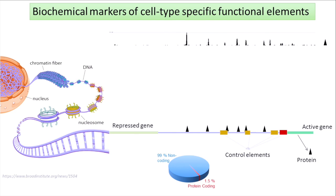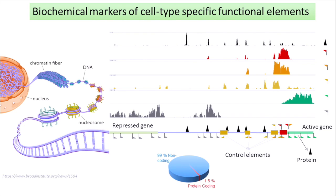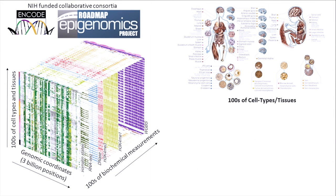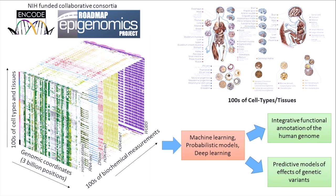The secret is that cells use various kinds of biochemical markers — shown here as little red, yellow, and green flags. Each of these biochemical markers marks different types of elements, including the control elements as well as the genes. The NIH funded a very large-scale project — two consortia called ENCODE and Roadmap — and they measured, genome-wide, hundreds of biochemical markers in hundreds of different cell types. We now have this massive data cube of information to make sense of, and this is where we come in. We apply machine learning, probabilistic models, and deep learning methods to transform this data cube into an integrative functional annotation of the genome.